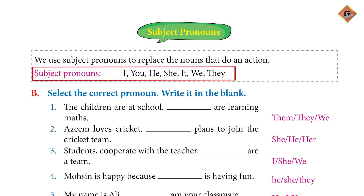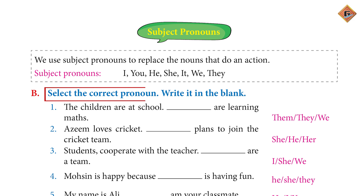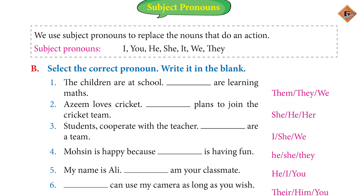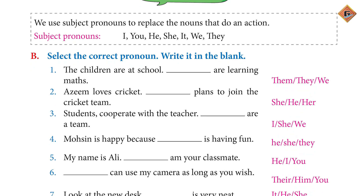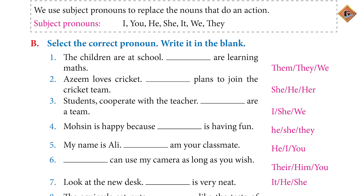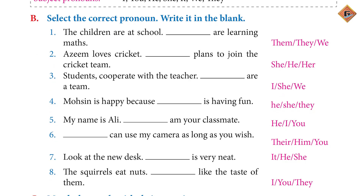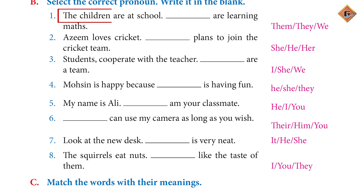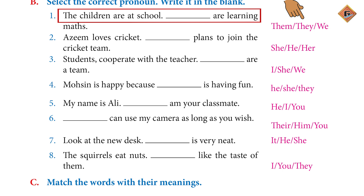Question B says: select the correct pronoun and write it in the blank. In the sentences below, three options are given; choose the correct pronoun. One: 'The children are at school. ___ are learning maths.' Answer: They are learning maths.